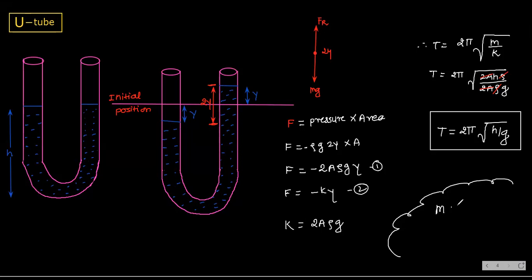The complete mass of the liquid: this side h and that side h, so total is 2h. Therefore m = ρ × V = ρ × A × 2h = 2A·h·ρ. Substituting: T = 2π √(m/k) = 2π √(2Ahρ / 2Aρg). Everything cancels and you get T = 2π √(h/g). For frequency, take the reciprocal: f = (1/2π) √(g/h). Note this down.